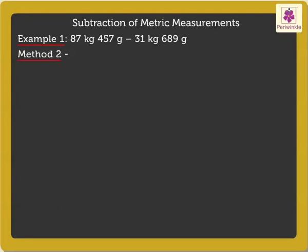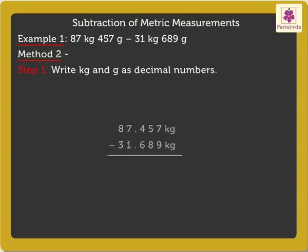Method 2. Let's follow a few steps to solve this. Step 1: Write the kilograms and grams as decimal numbers. Thus, we get 87.457 kilograms and 31.689 kilograms.